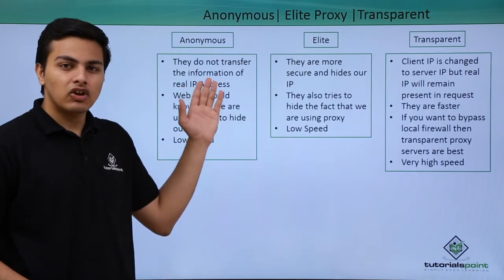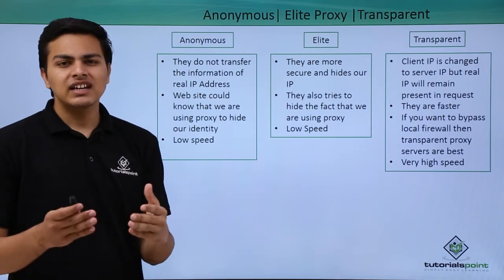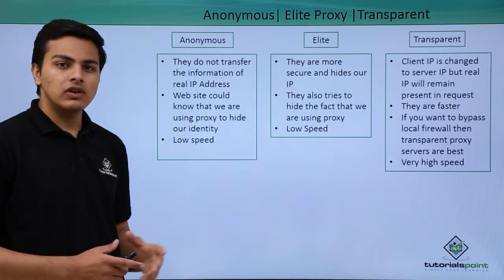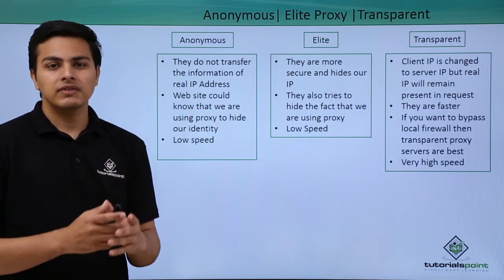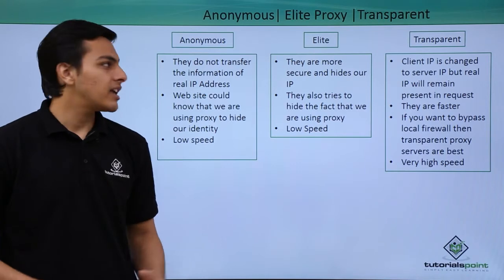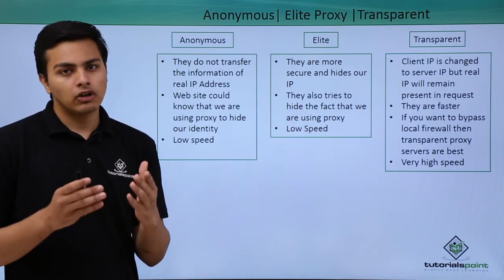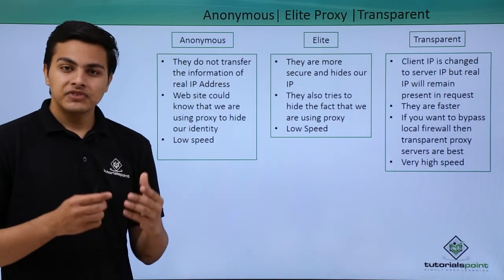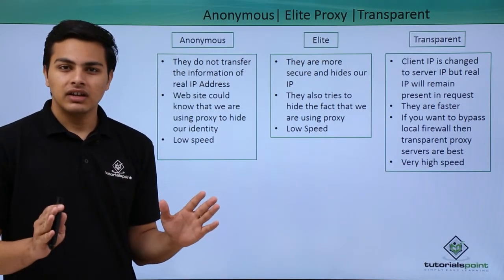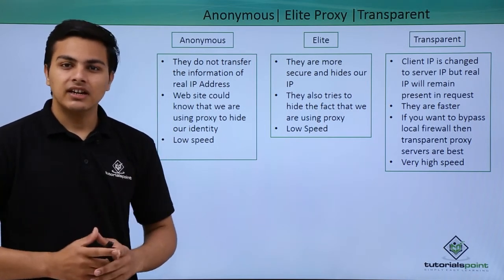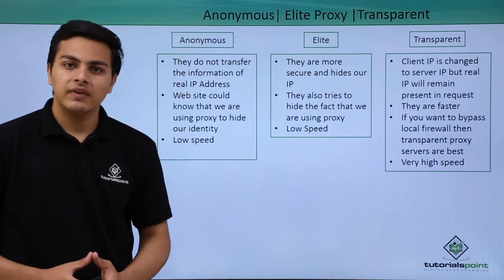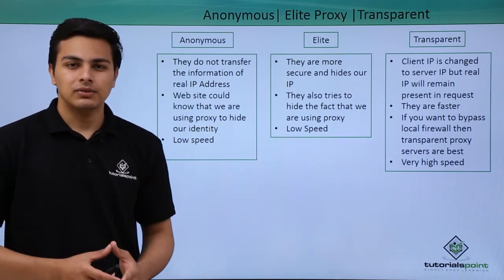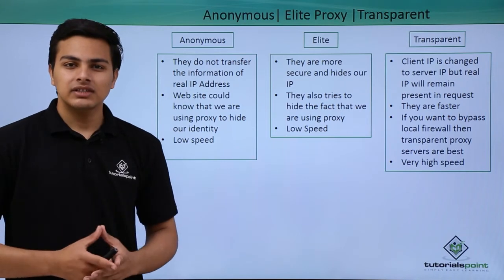There are three proxy categories: anonymous, elite, and transparent. Anonymous proxy is the most secure. Elite proxies are also secure and hide your IP address. Transparent proxies change your IP address but are not secure — however, because they are not secure, the speed of transparent proxies is very high, whereas anonymous and elite proxies are slower.